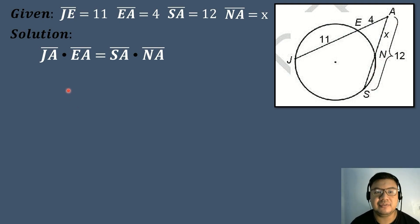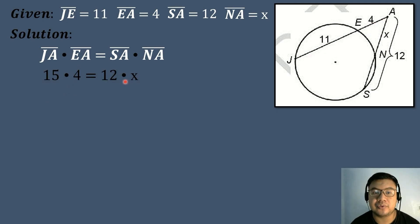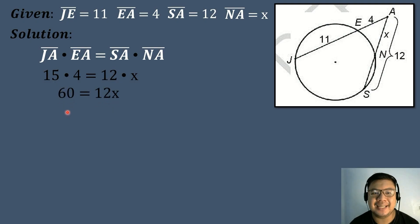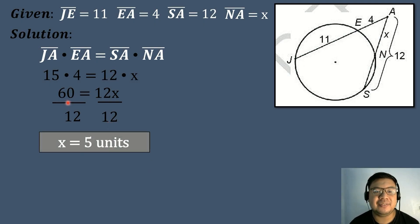We substitute the corresponding values. The value of segment JA is 11 plus 4, which equals 15. So 15 times 4 equals 12 times X. Simplifying, 60 equals 12X. We divide both sides by 12: 60 divided by 12 equals 5. So the measure of segment NA, the external part of secant segment SA, is equal to 5 units.